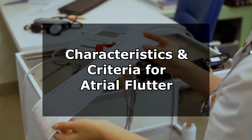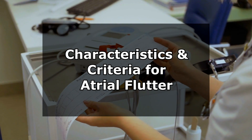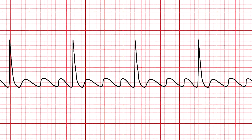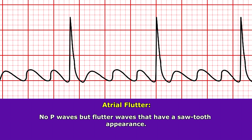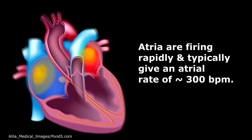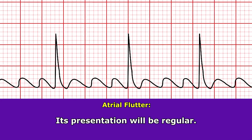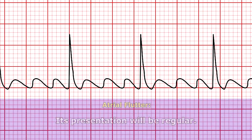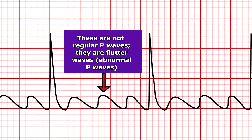What are some characteristics and criteria to tell you that you're dealing with a flutter? When you look at that ECG waveform, you're going to see that there are no P waves, but flutter waves that look like a sawtooth. The atria are firing very rapidly, typically around a rate of 300 beats per minute, and its presentation will be regular. These waves in front of the QRS complex are not P waves, but abnormal P waves that we term flutter waves, and they have this sawtooth appearance.